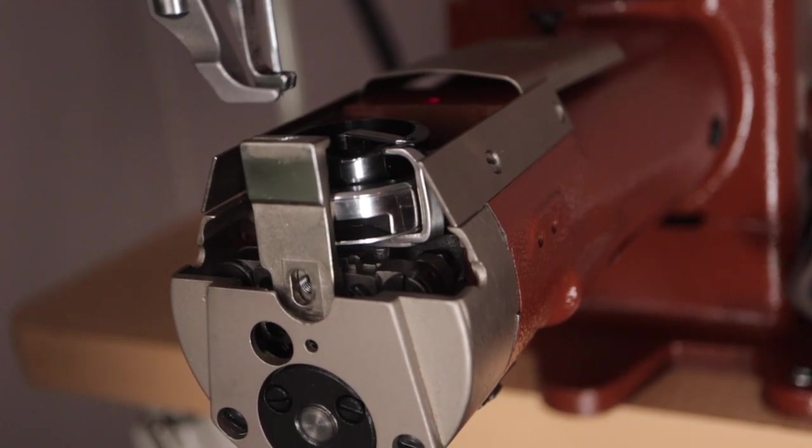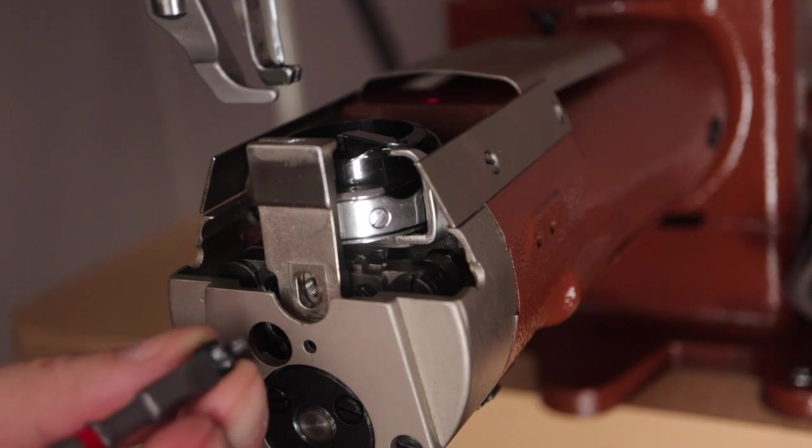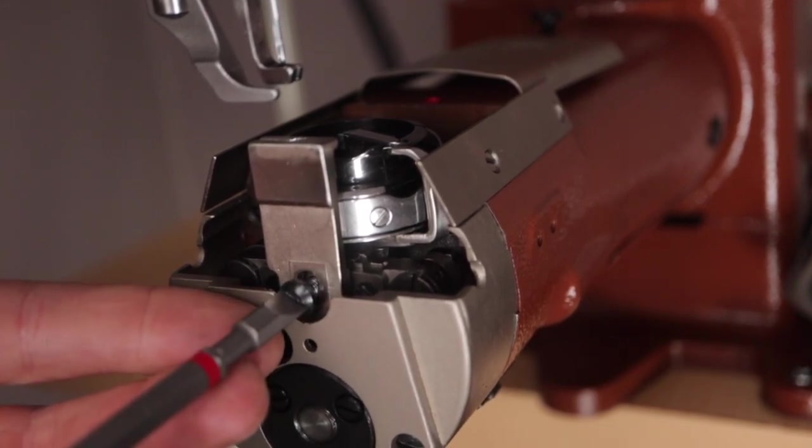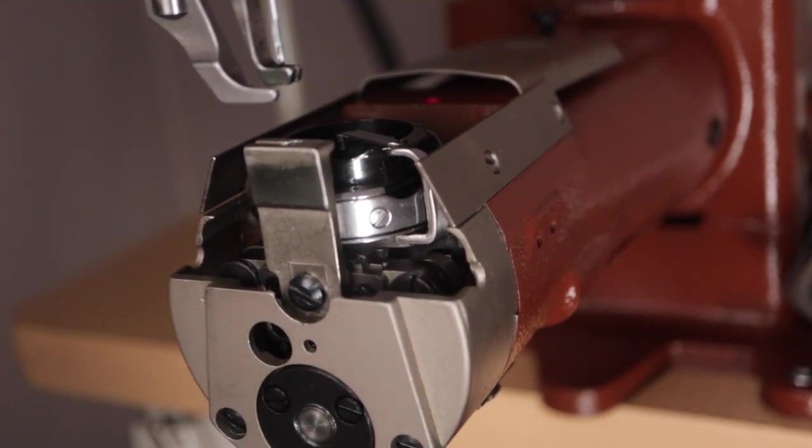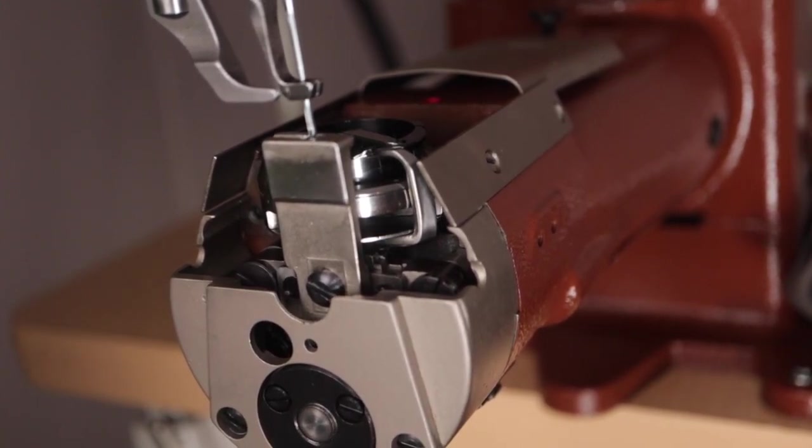You might need to turn the hand wheel to adjust the position so you can properly screw the feed dog screw into place. Lower the needle into the feed dog to check for proper placement of the needle in the center hole.